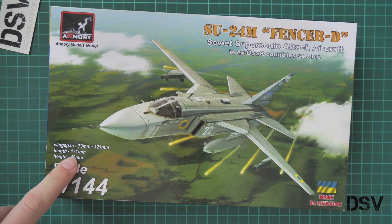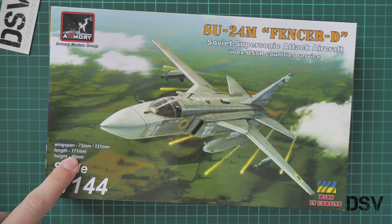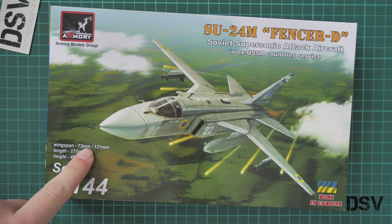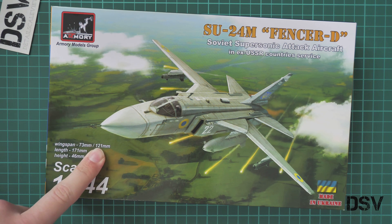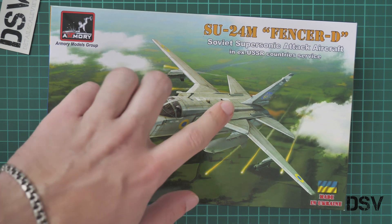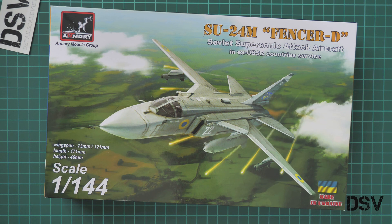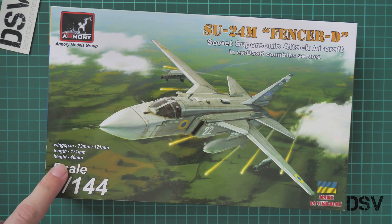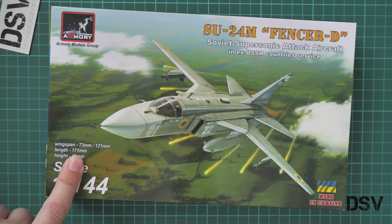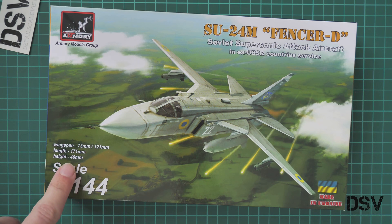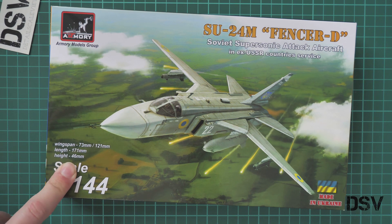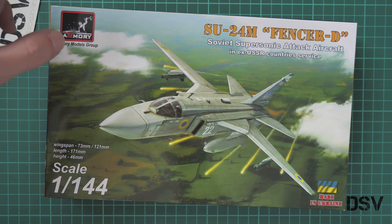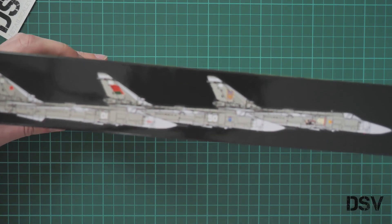First of all, we have this nice box art here with information about the kit. Wingspan will be 73 or 121 millimeters, depending on the variable wing angle. Length will be 171 millimeters, which is quite impressive in my opinion. Height will be 46 millimeters, which is more or less standard for 1/144 scale.